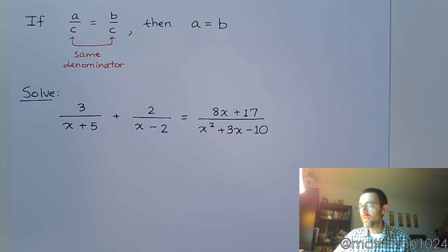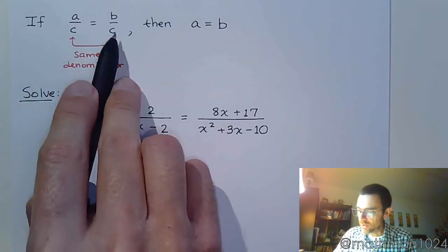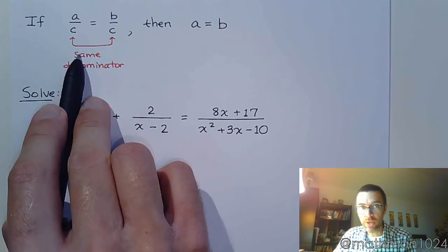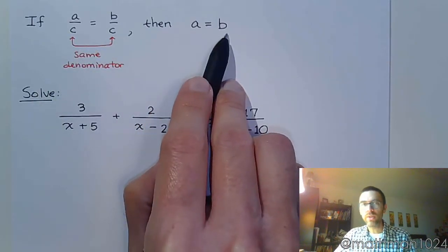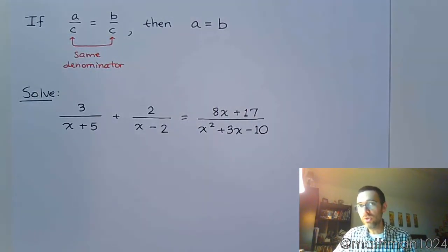Now, what we saw previously is that if you have two fractions that are equal and you have the same denominator, then you can equate their numerators, and that's what we're going to be using in order to solve a lot of these following equations.